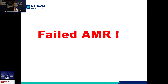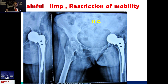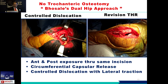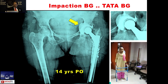For protrusio with failed total hip replacement — often after five years the calcar is lost and the hip goes into protrusio. When revising, the ETO approach is best as it gives very good exposure. Remove the stem and the exposure is excellent. Clear the trochanteric area well. Since the periphery is intact in protrusio, you can do impaction bone grafting and it heals very well.